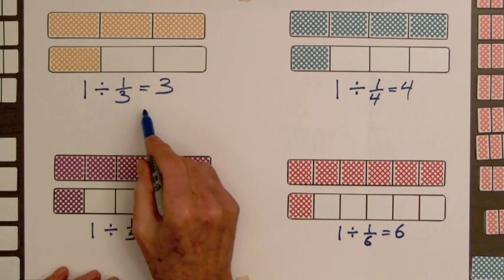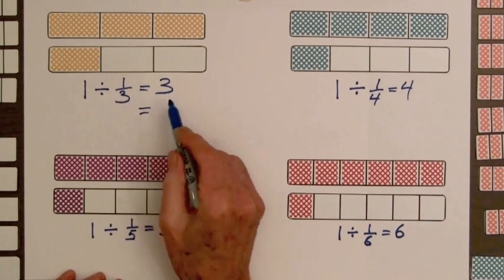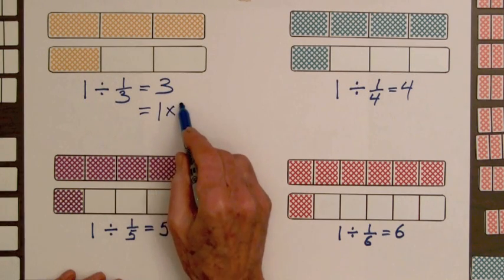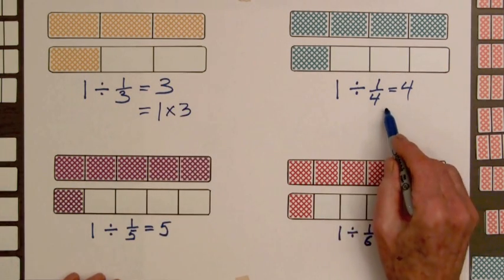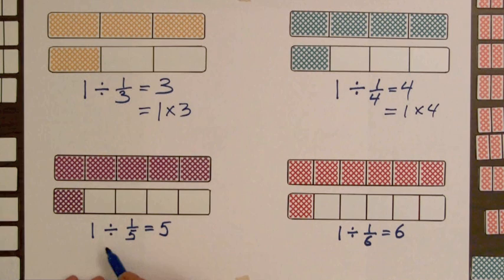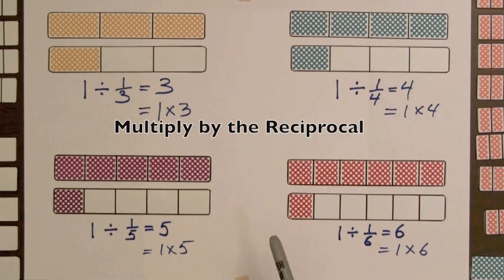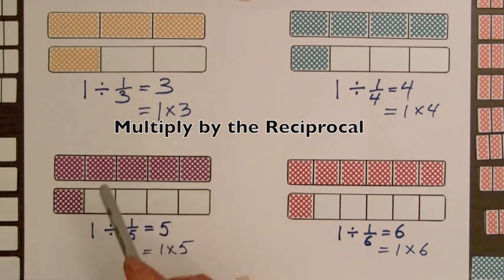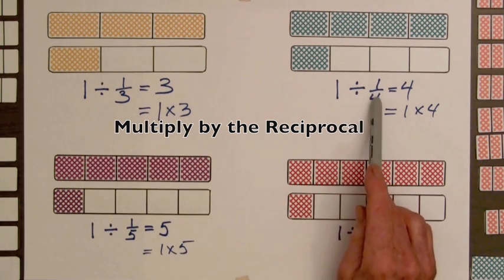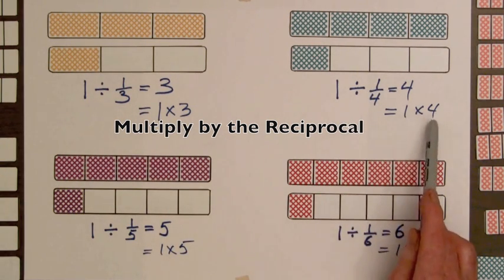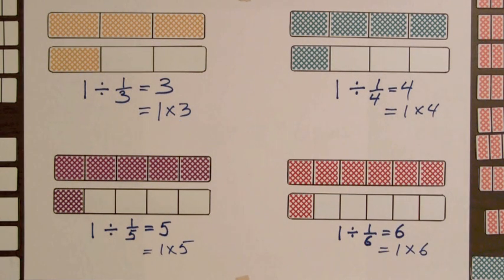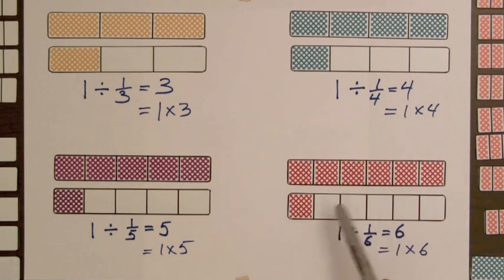So another thing they might notice is that one divided by one-third could be written as one times three, one divided by one-fourth equals one times four, one divided by one-fifth equals one times five, and one divided by one-sixth equals one times six. So to divide the first number by the second, we can multiply the first number times the reciprocal of the second.